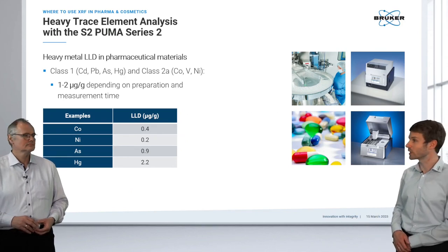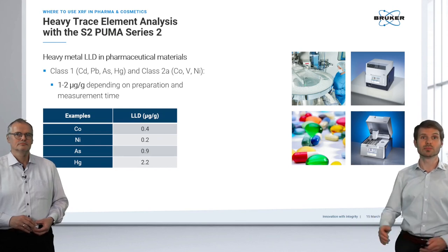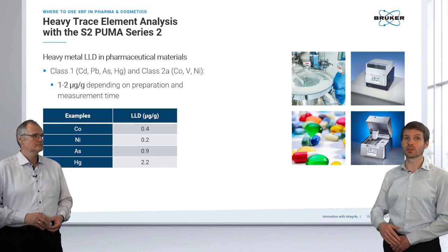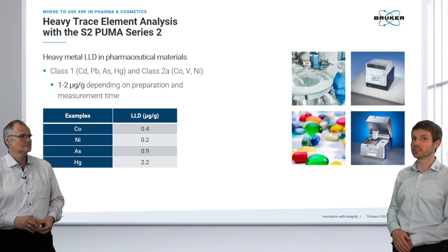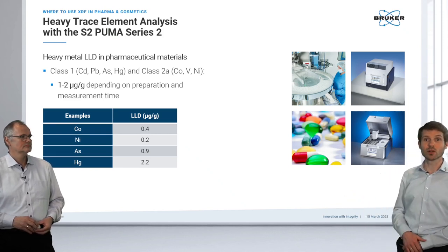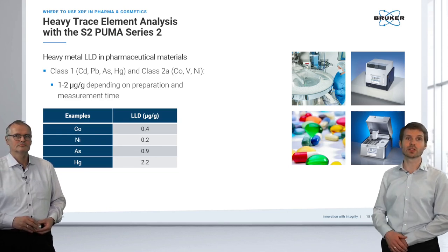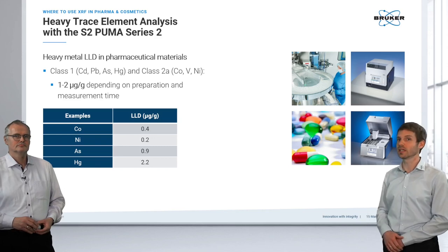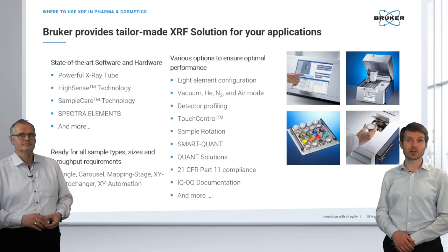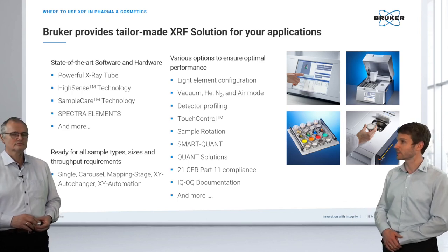Looking at what our systems can achieve: for the S2 PUMA, measuring cellulose samples, we can get detection limits on the order of 1–2 ppm for Class 1 and Class 2A elements. For cobalt, we even reach the sub-ppm level — and that's on an energy dispersive system. With that, we're near the end of our second presentation.